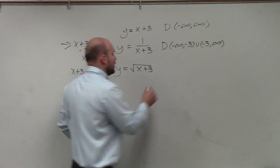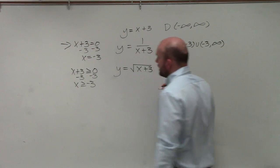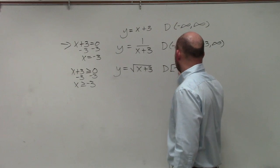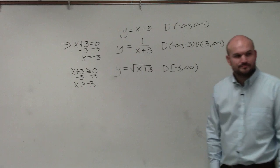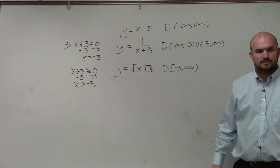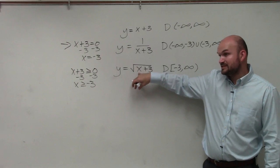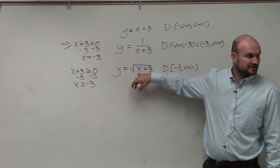So we write our domain as all numbers that are equal to negative 3, but greater than, which would go towards infinity. It can be negative 3. Because if you plug negative 3, you get 0. Square root of 0 is 0. That's fine. It's in the domain.